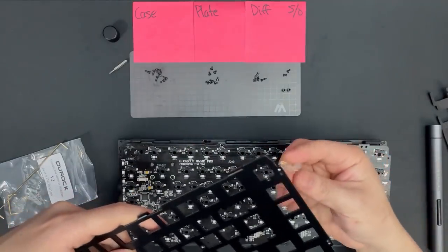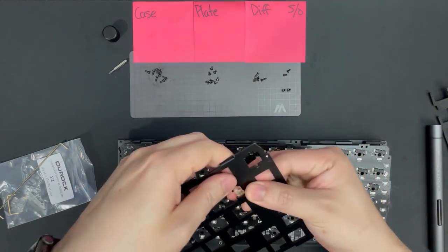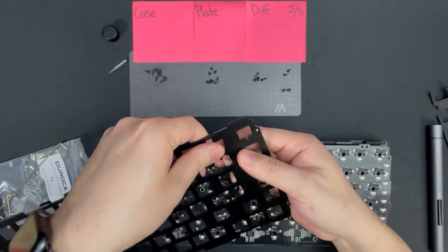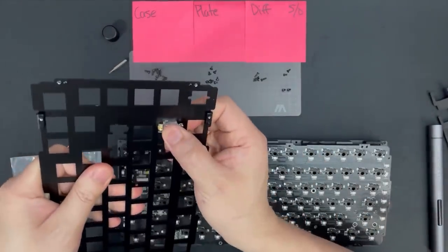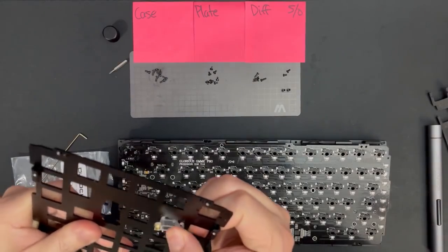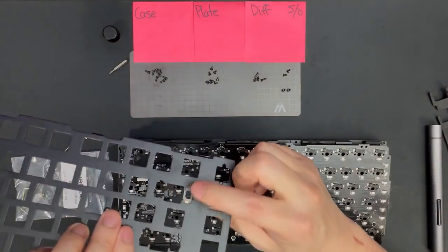Fast-forwarding a bit into the disassembly, I can also confirm that there are indeed fitment issues with the Duroc stabs and the stock aluminum plate. The stabilizer openings in the aluminum plate are too tight to fit the Duroc stabs without sanding the edges, which is a real shame. I hear the openings are even smaller on the brass plate, so I would avoid either of those if using aftermarket stabilizers.